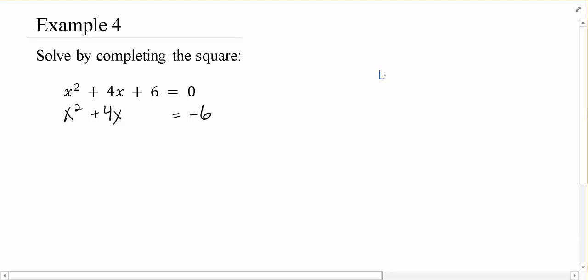Our magic number is take the middle coefficient, divided by 2, and square it, so that would be 2 squared or 4. So we're going to add 2 squared or 4 to each side.